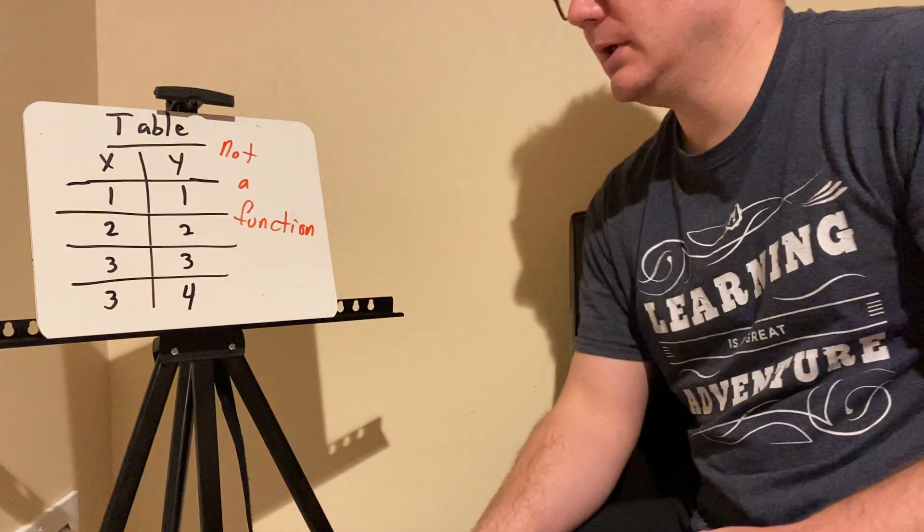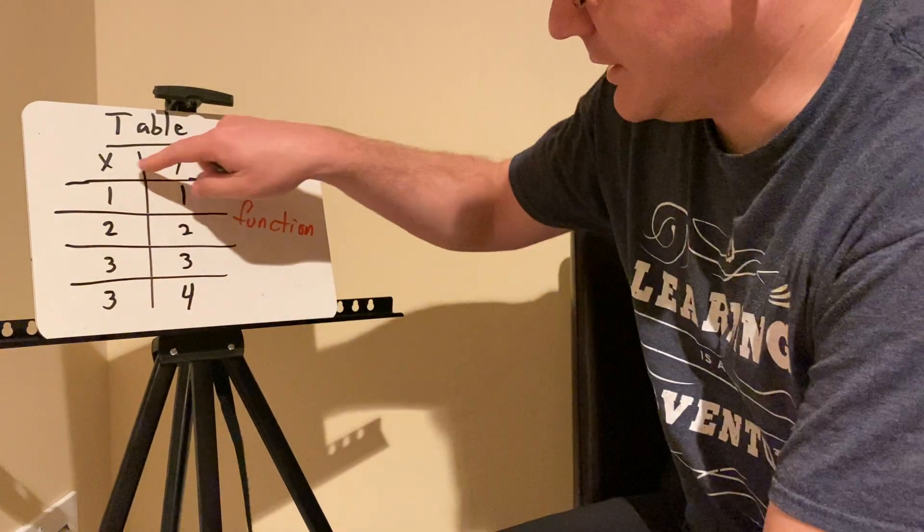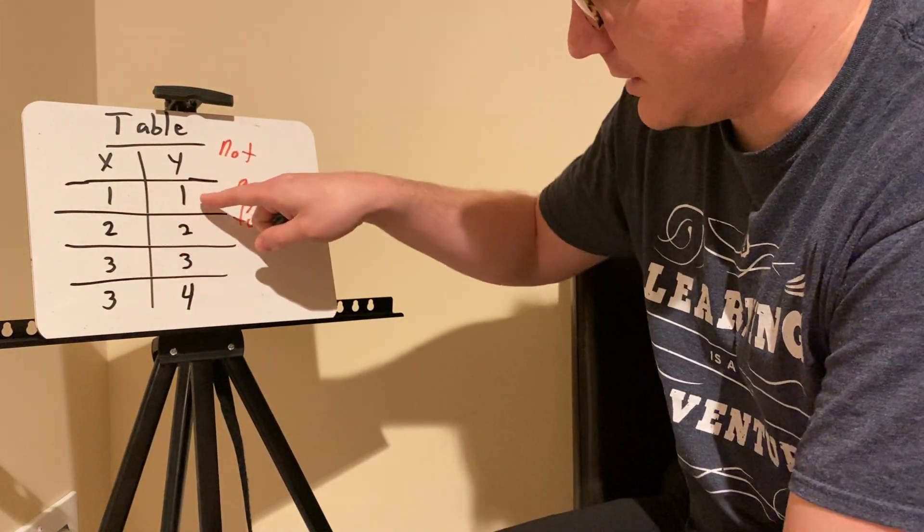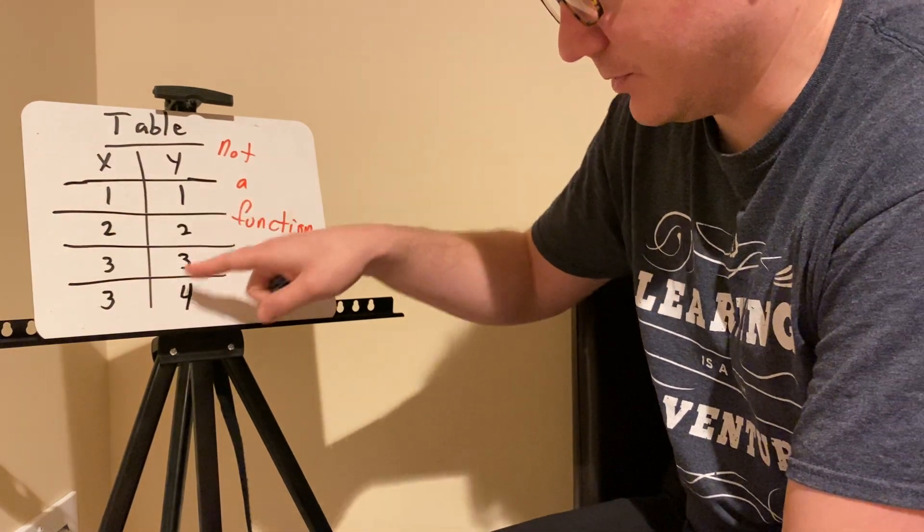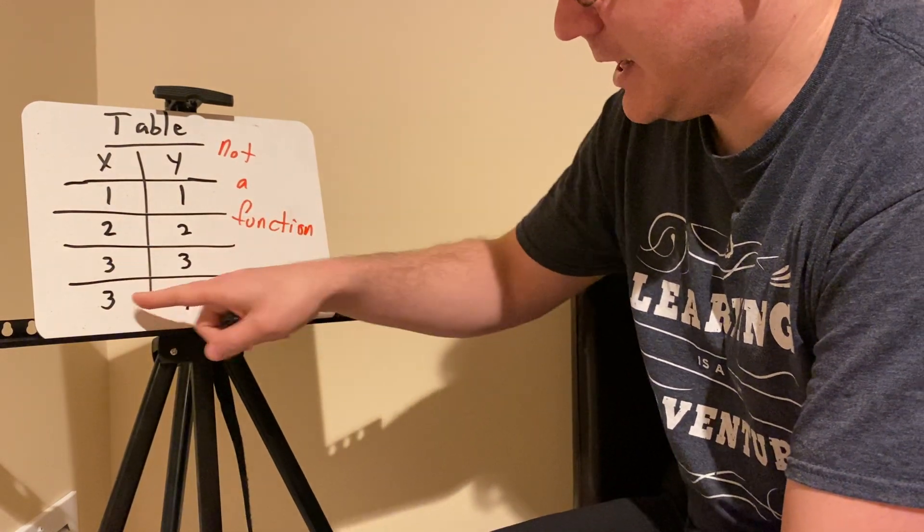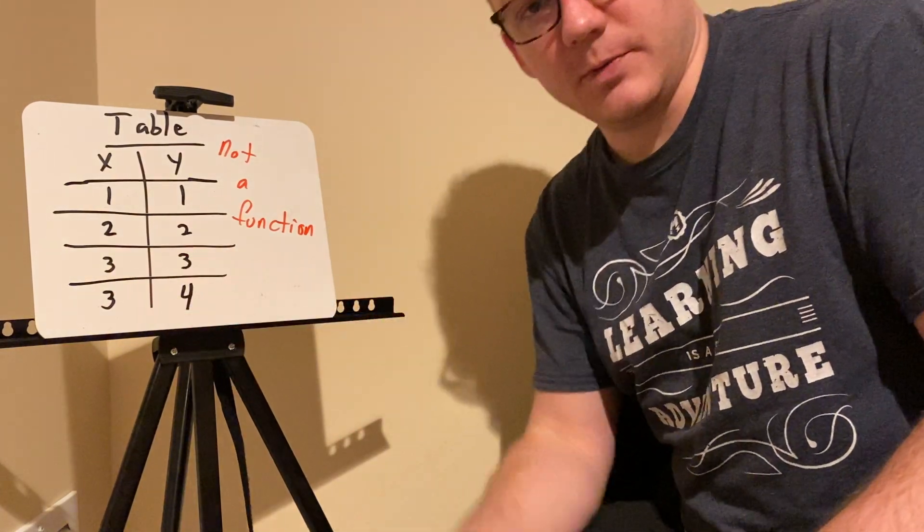A table. This table is currently not a function, but we can fix that. Currently the table has an x value of one, an output of one, an input of two, an output of two, an input of three, an output of three, an input of three, and an output of four. You have a repeated input with two different outputs.